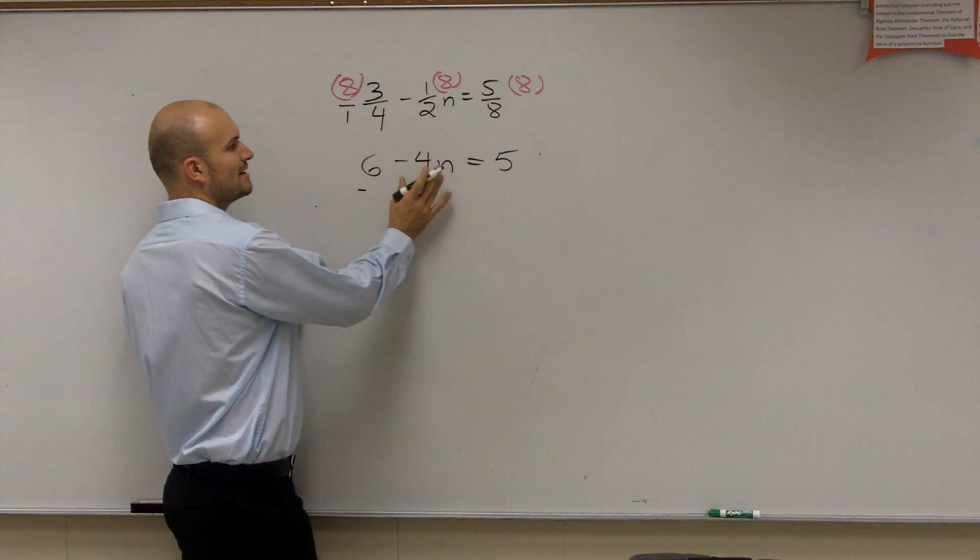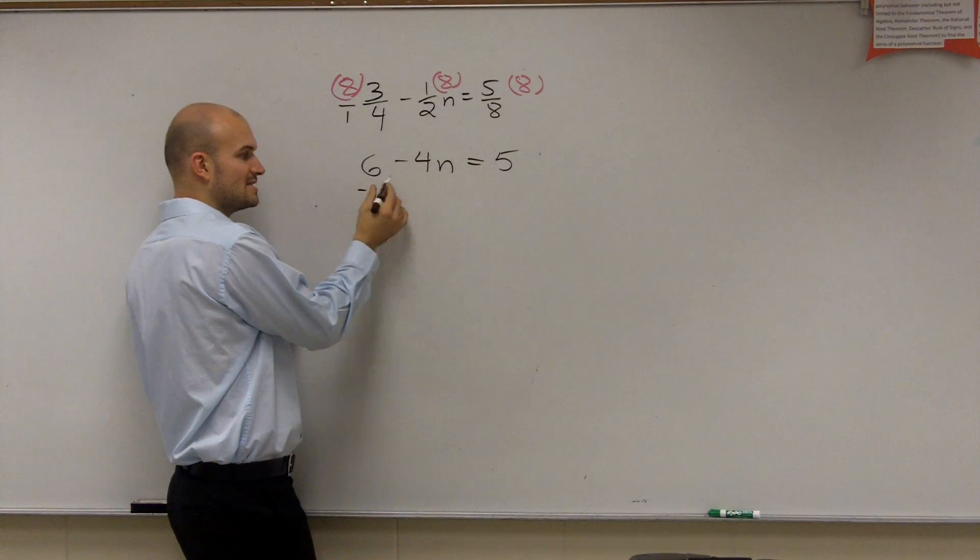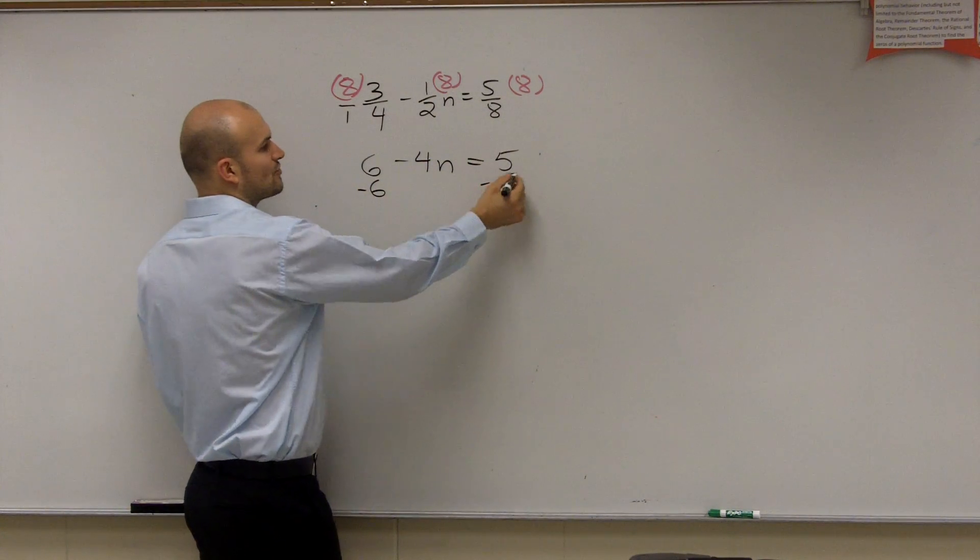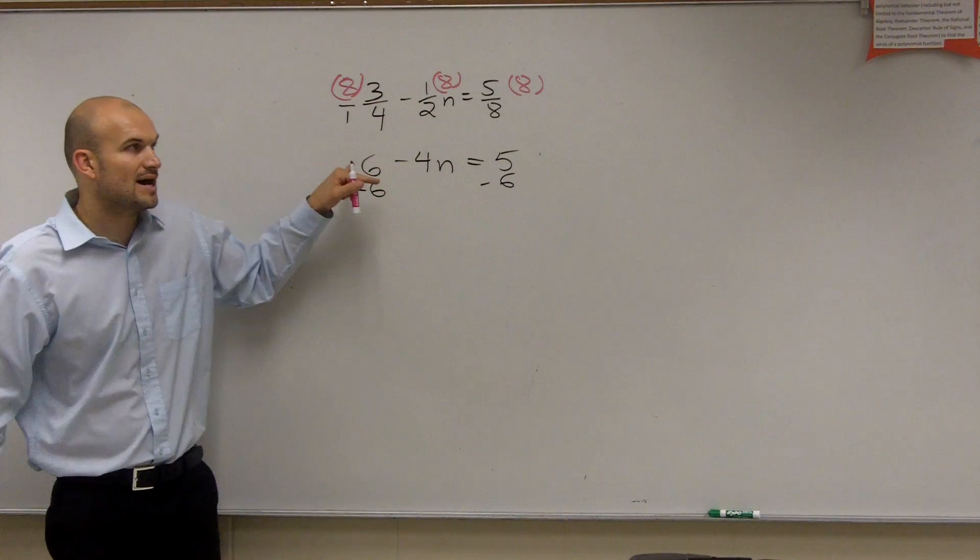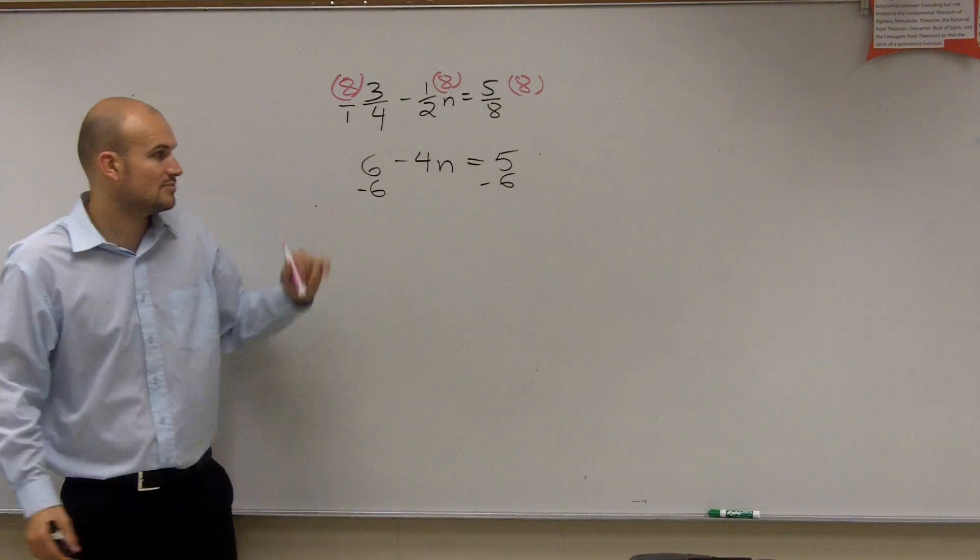And now I need to undo what's happening to my variable. Since that's a positive 6, I'm sorry, not positive 6n. Since that's a positive 6, I need to subtract the 6. OK? Subtract the 6 on both sides.